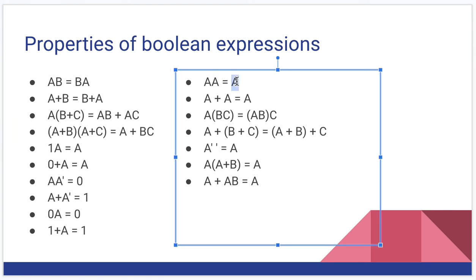Anything anded with itself is just itself. So A and A gives me A. If you think about it, 1 and 1 gives me 1. 0 and 0 gives me 0. Same if you do or. 1 or 1 gives me 1. 0 or 0 would give me 0.